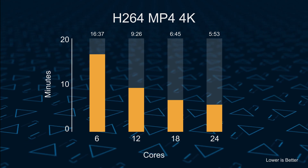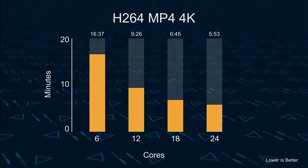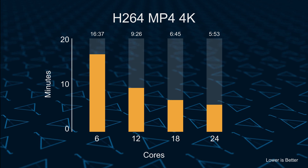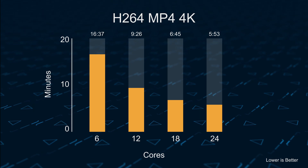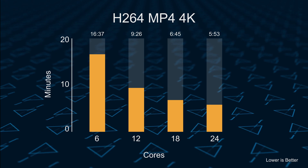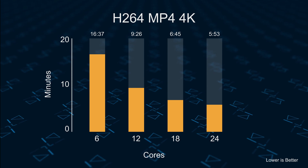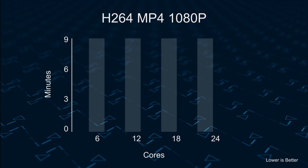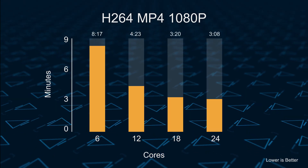Now looking at H264 4K 8-bit: the 6-core took 16 minutes 37 seconds to export. Going to 12 cores dropped almost 7 minutes to 9 minutes 26 seconds, then 6 minutes 45 seconds for the 18-core, and the full 24-core came in at 5 minutes 53 seconds. You can see the 6-to-12 and 12-to-18 core jumps decreased export time significantly, but going from 18 to 24 cores the performance delta is noticeably smaller.